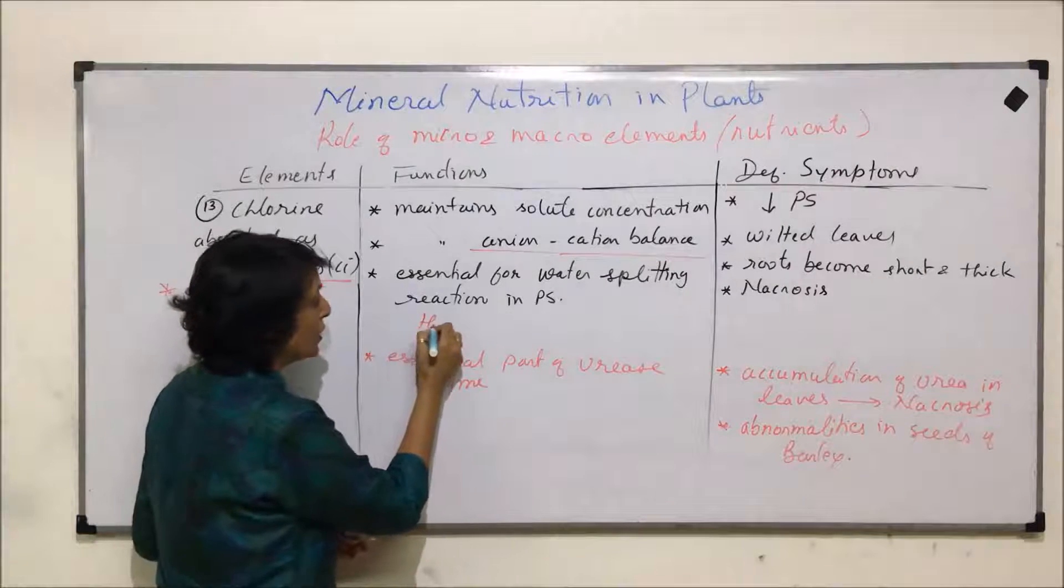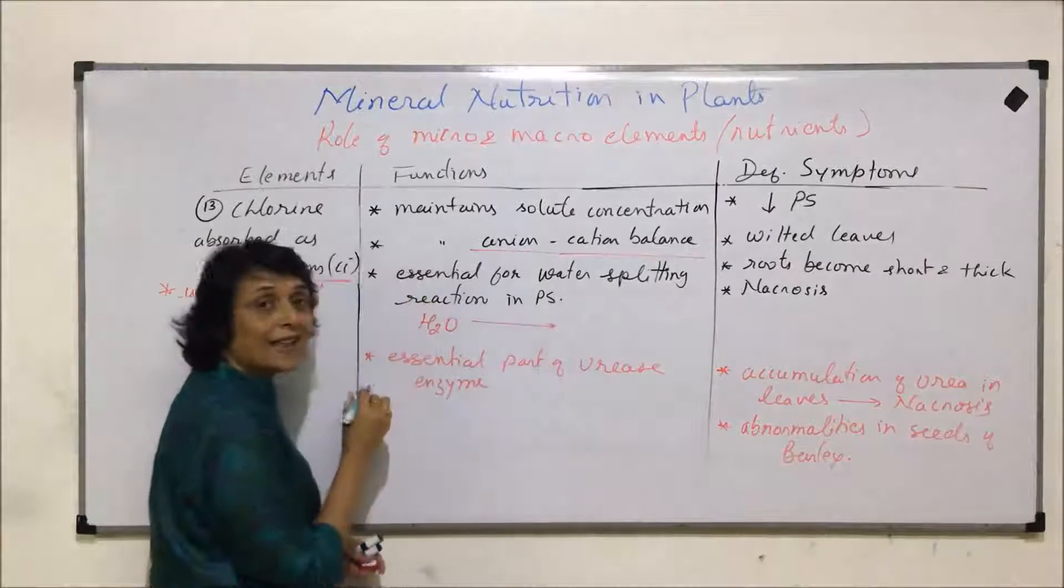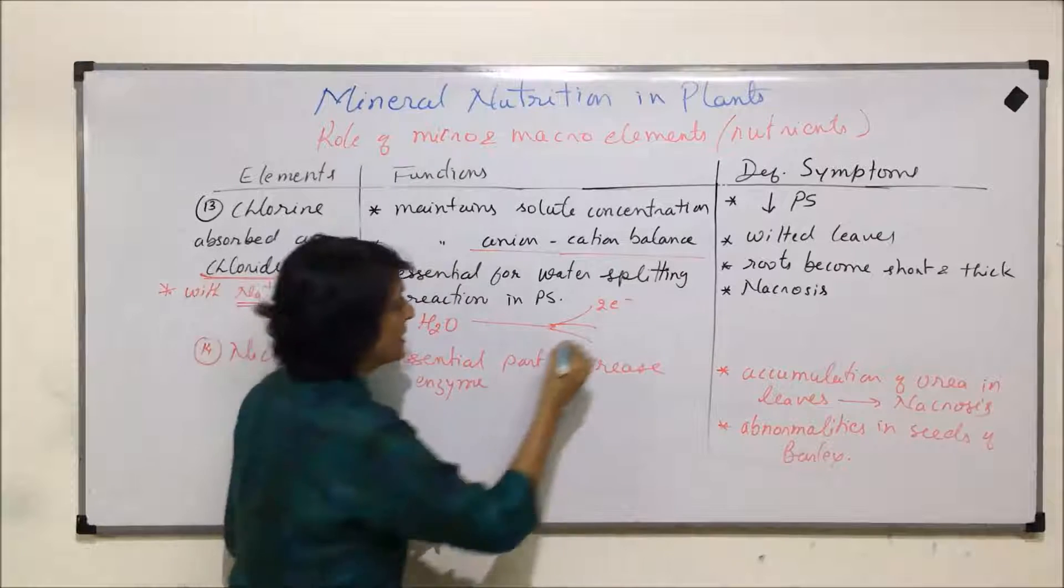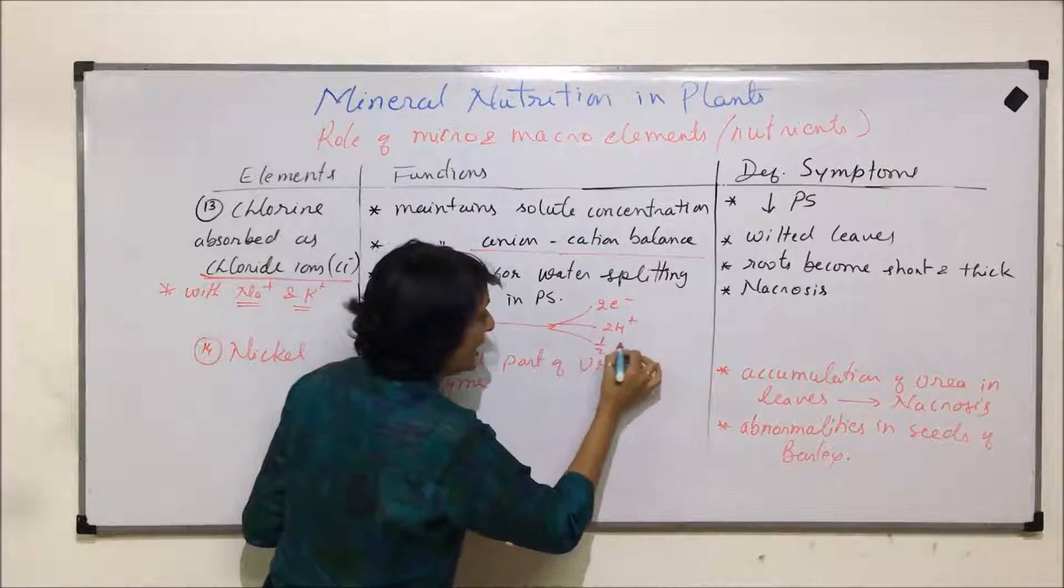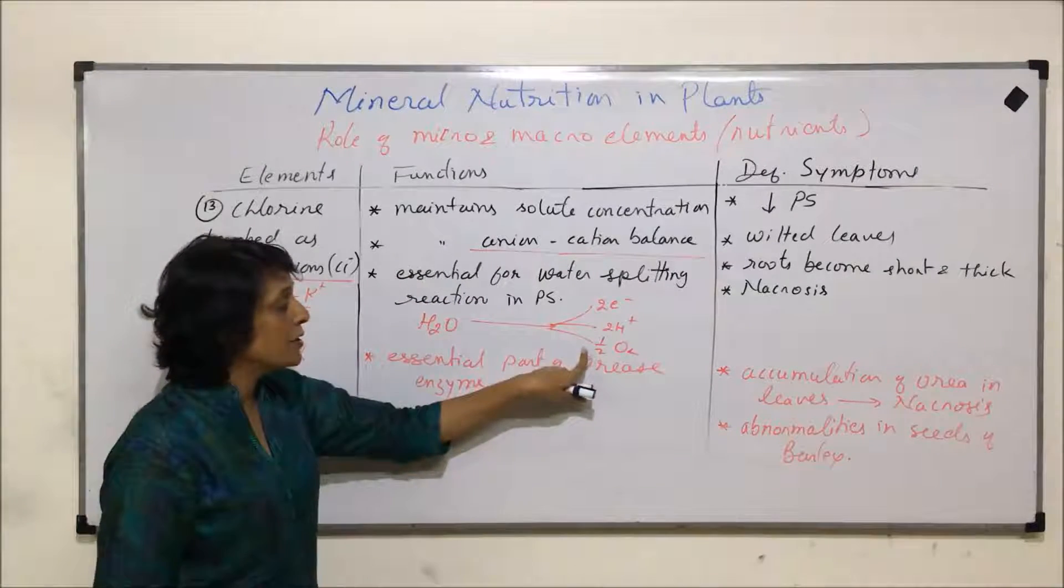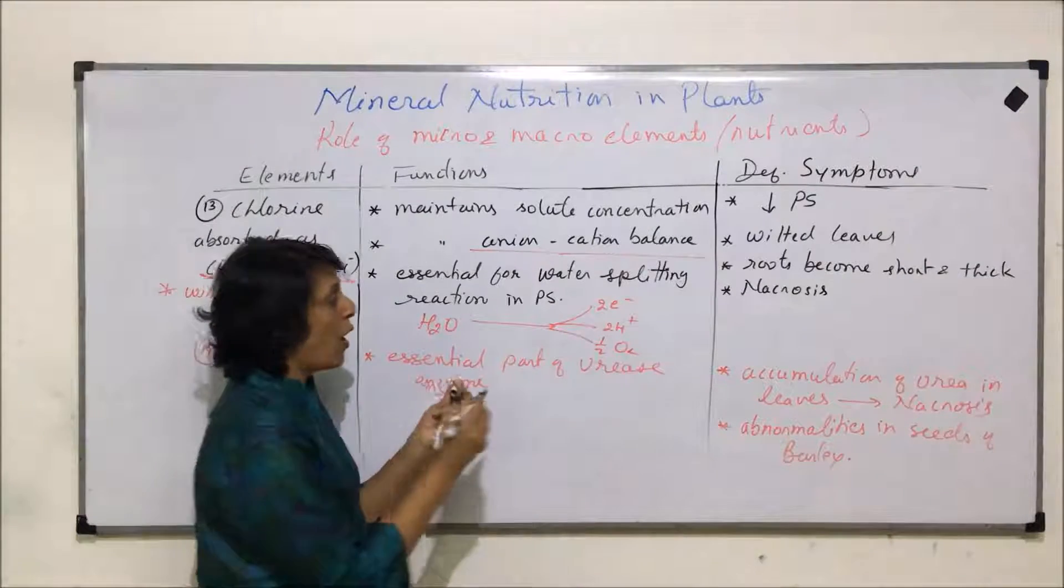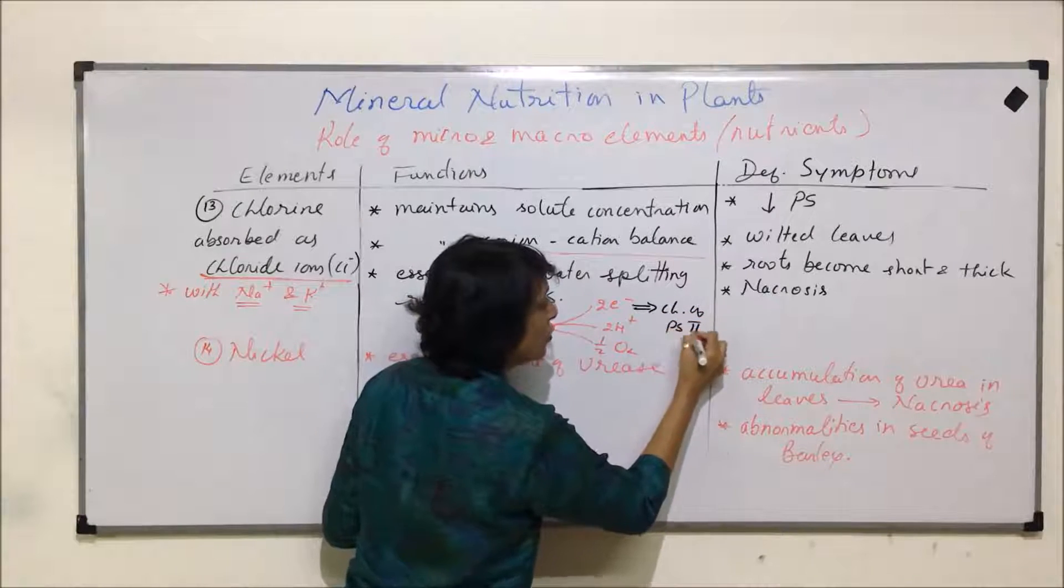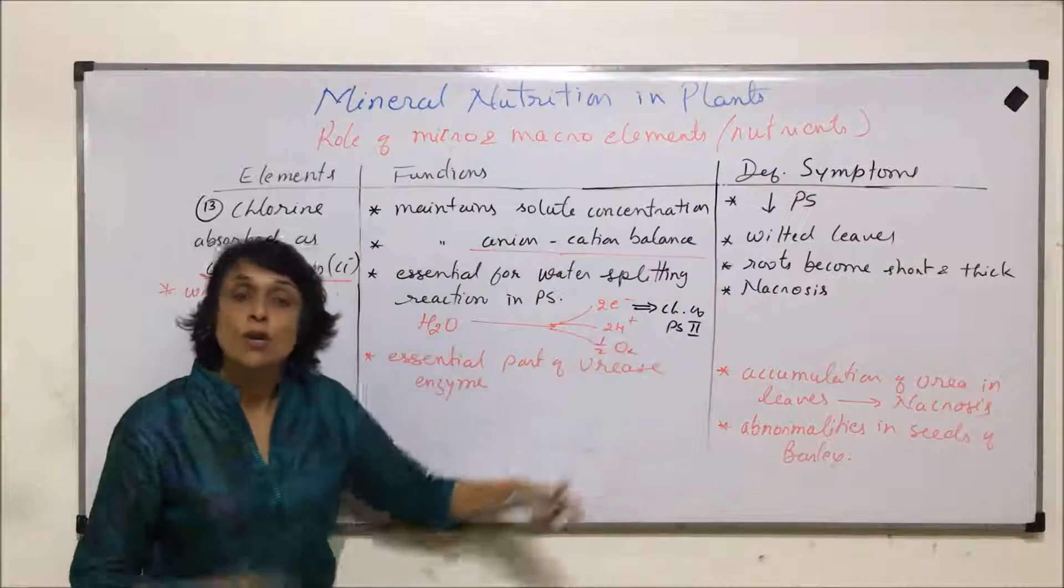We know during photolysis water splits in presence of sunlight to release three things. Electron pair is released, a pair of protons is also released, and one atom of oxygen is given out. This oxygen is given out as a by-product, and this electron is given to chlorophyll of PS2 from where this process of photosynthesis is going to start.